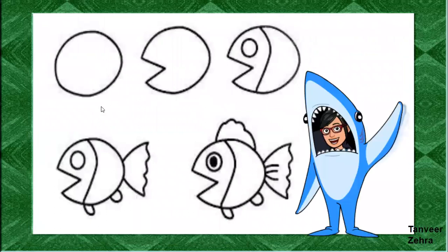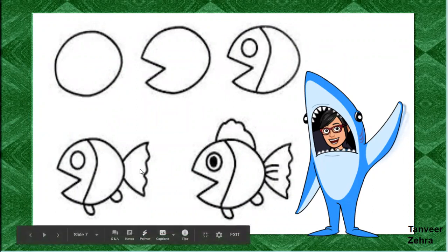Then for another drawing, I have made a circle. Then added this shape, then the tail — and this is our fish, completed in 5 steps.